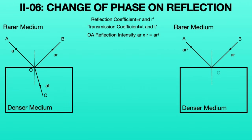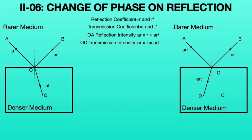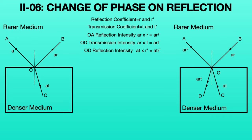Another light ray refracts along the direction of OD, so the intensity of ray OD is AR × T = ART. Now consider another light ray in the denser medium incident on the rarer medium surface at O, with intensity AT. This ray CO splits into two light rays at O. One ray reflects along the direction of OD; the intensity along OD is AT × r dash = ATR dash, where r dash is the reflection coefficient in the denser medium.